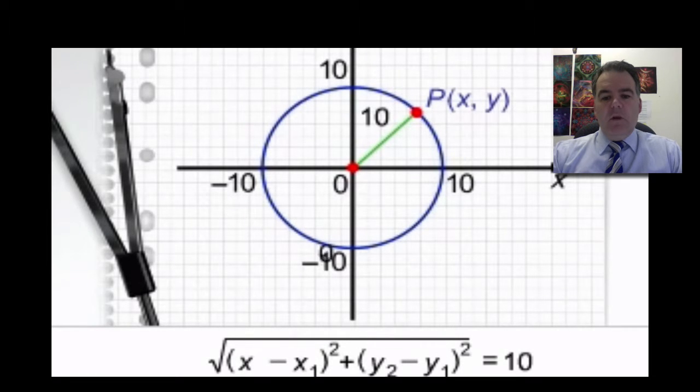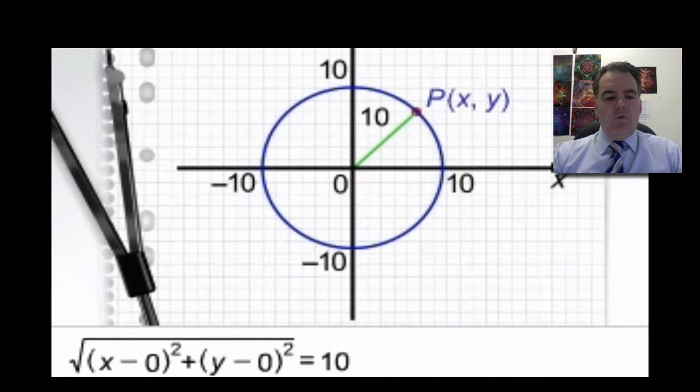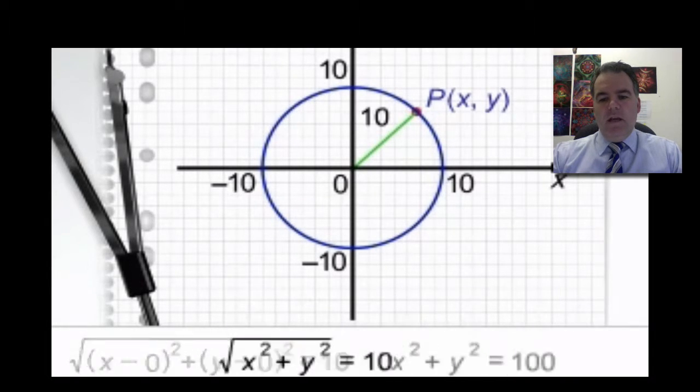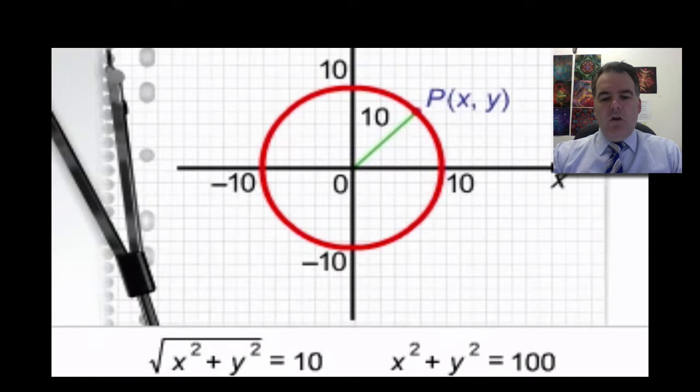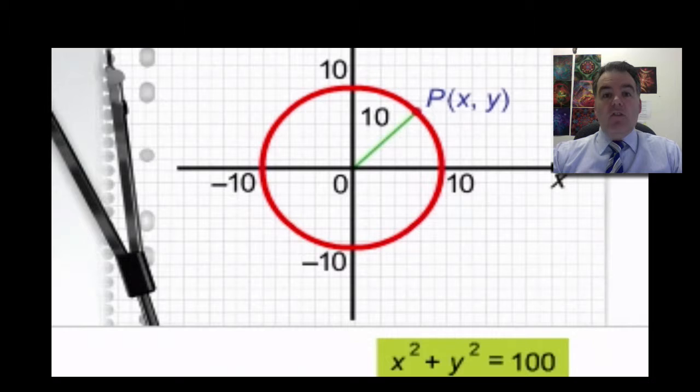Or you could use the distance formula. The distance is 10, x and y, the distance from (0, 0), so we get the square root of x squared plus y squared equals 10. Square both sides, we get x squared plus y squared equals 100. And that's the equation of that circle.